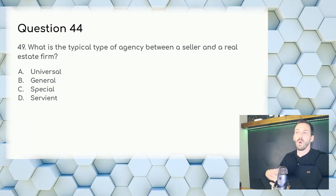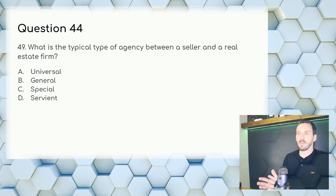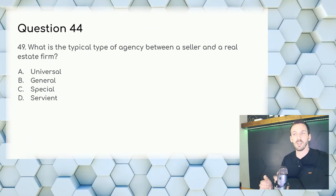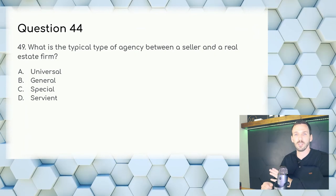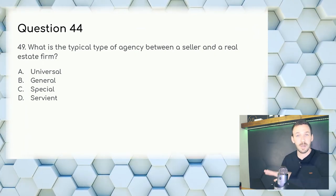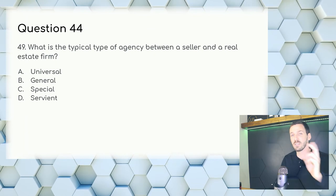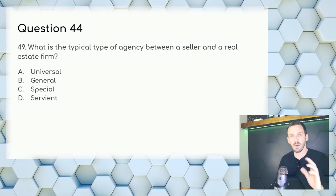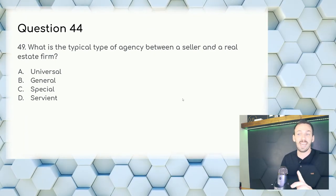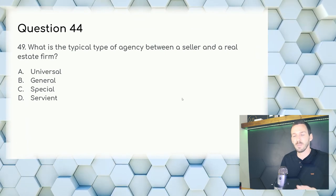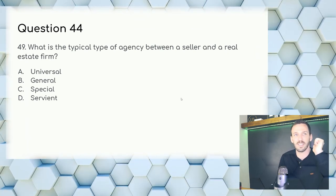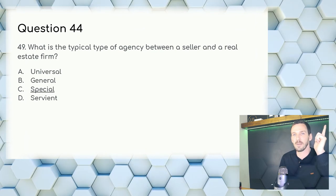Question 44: What is the typical type of agency between a seller and a real estate firm? Universal agents have unlimited powers; general agents have some powers like a property manager; servient is a trick answer. Answer: C, special agency.